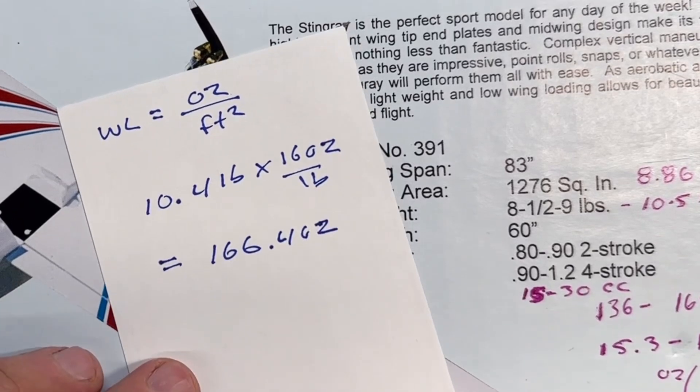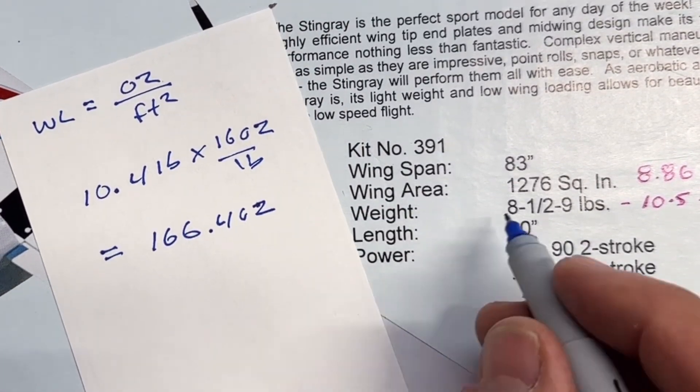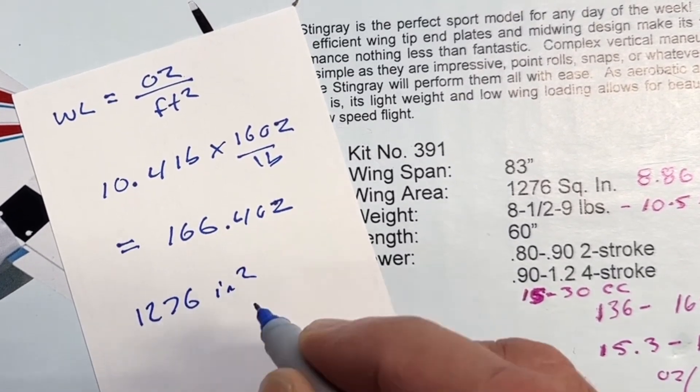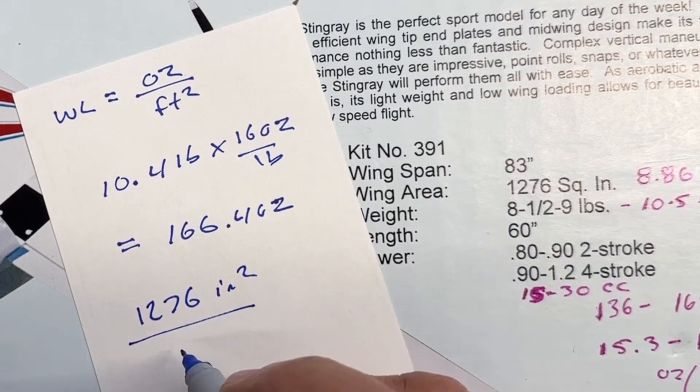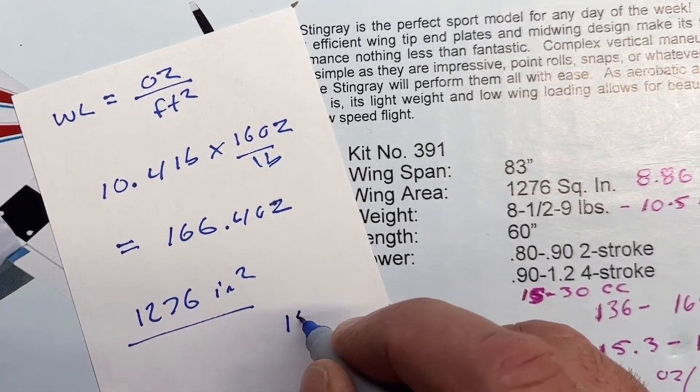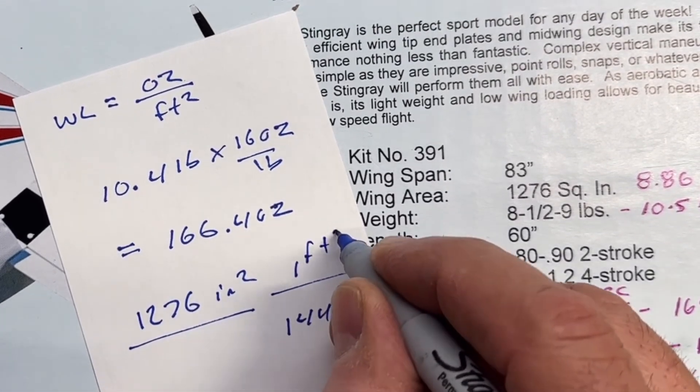And then I have to convert my wing area, which again here is 1276 inches squared. And we're just going to divide that by, well, what we'll do here is we'll go 144 inches squared. And that's equal to one foot squared.